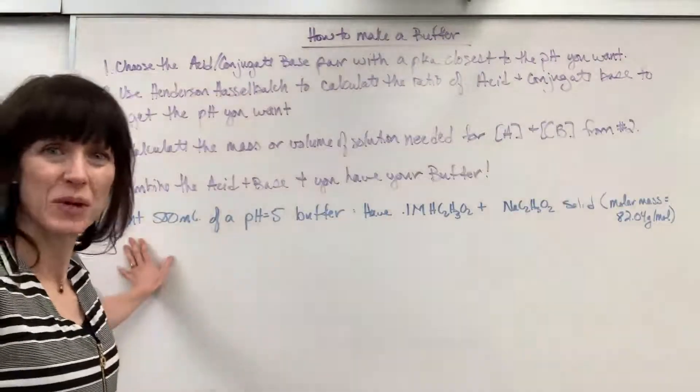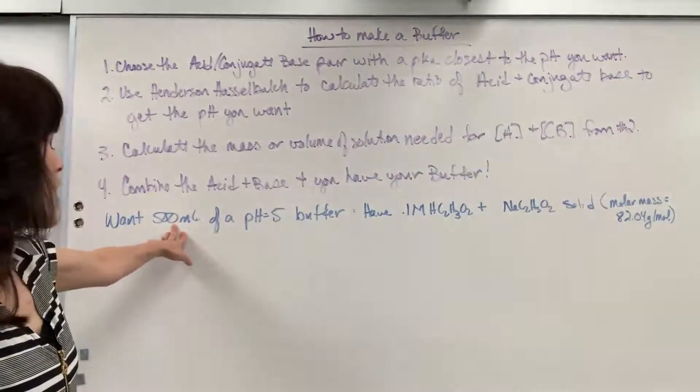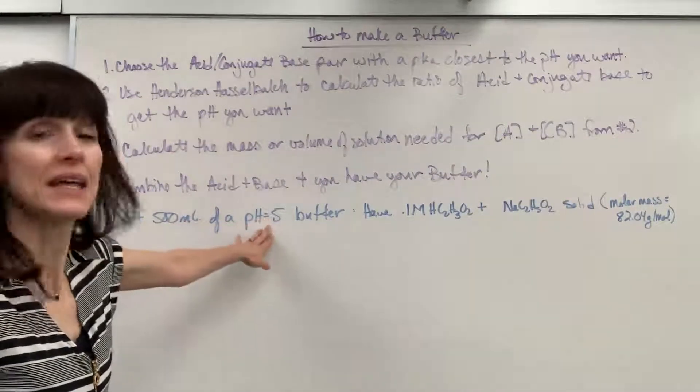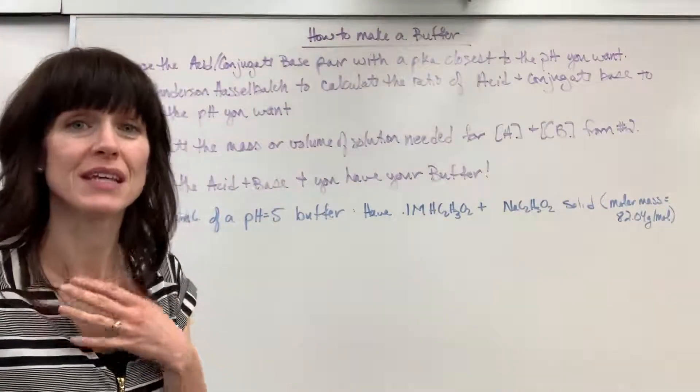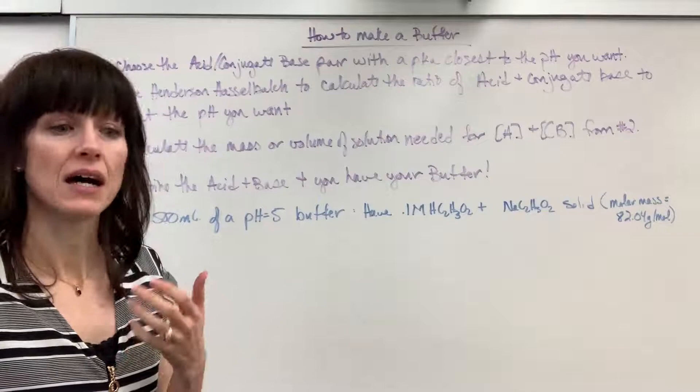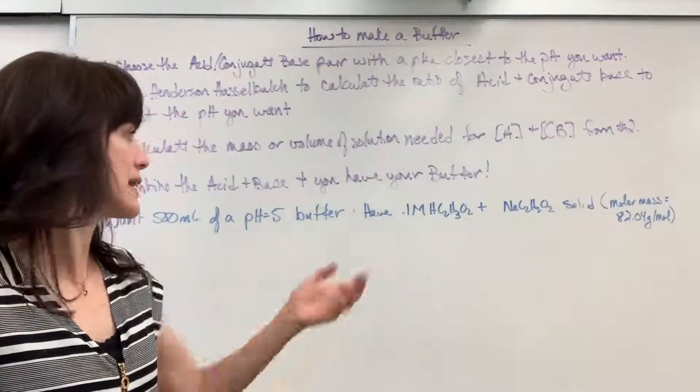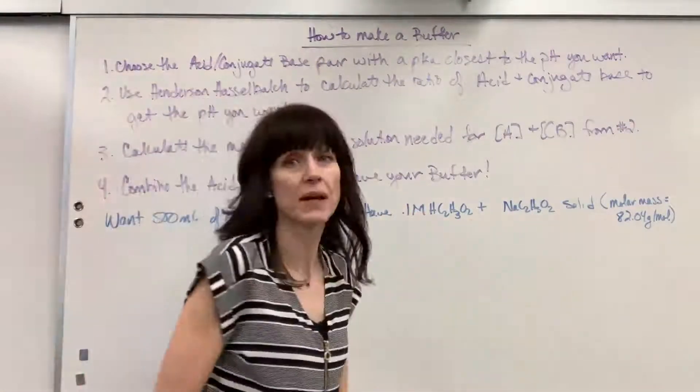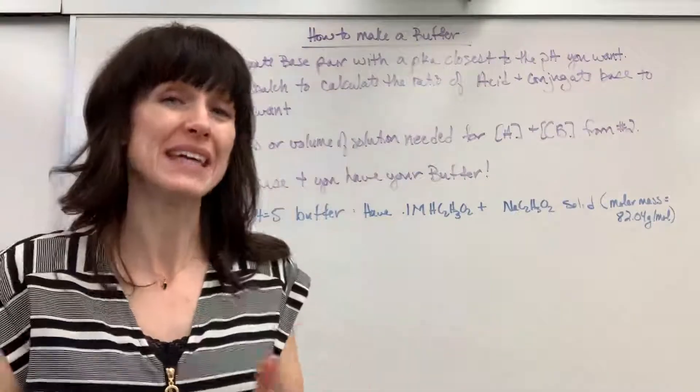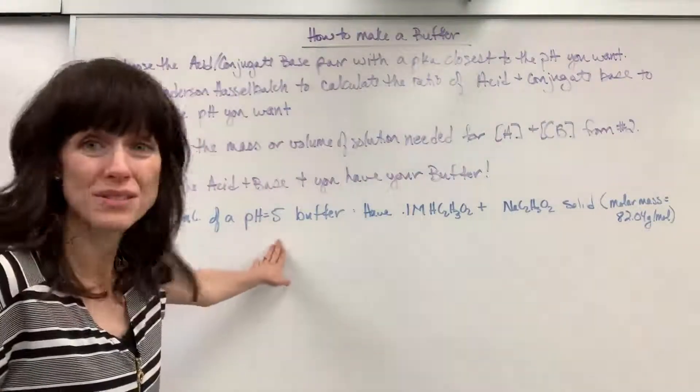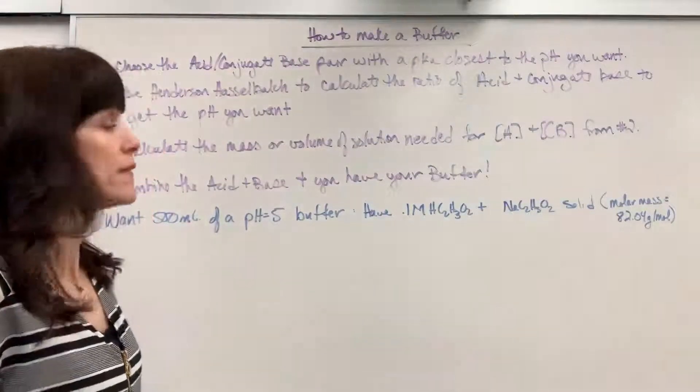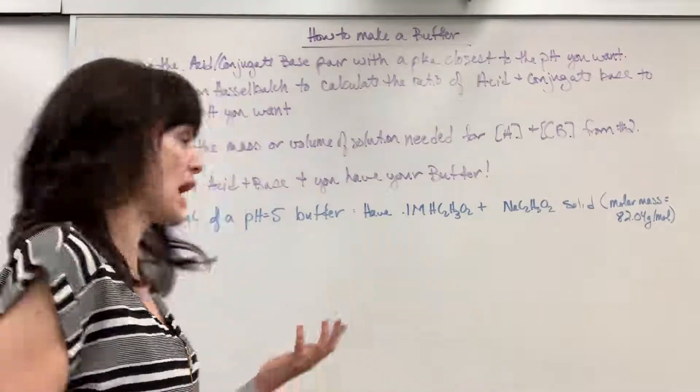Let's pretend that we want 500 mils of a buffer that has a pH of 5. So with that, I chose to use the acetic acid and acetate ion as my acid conjugate base pair because its pKa is 4.74. That's really close to a 5.